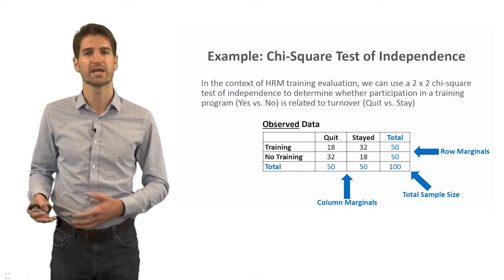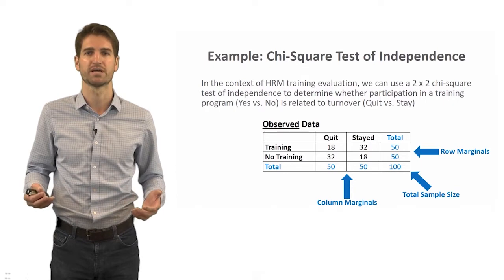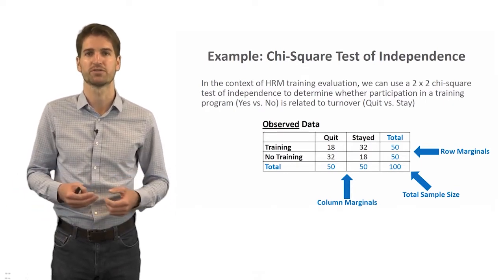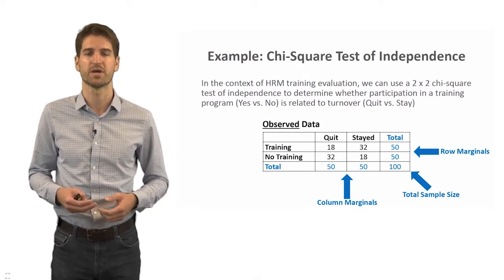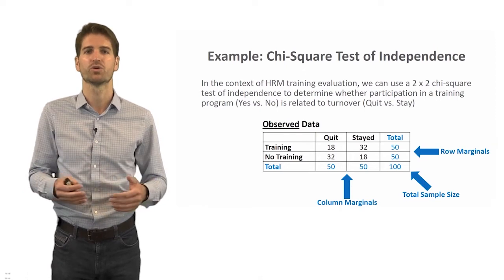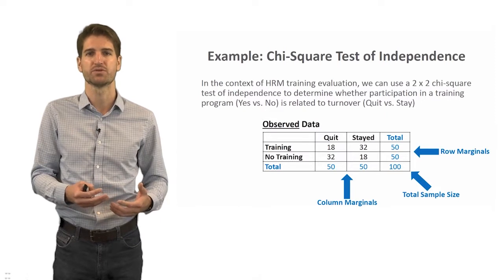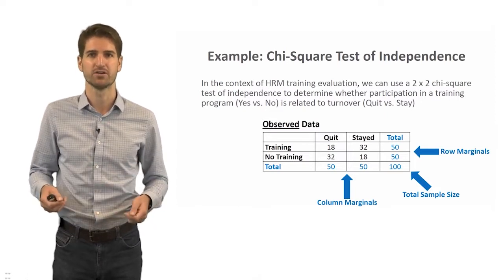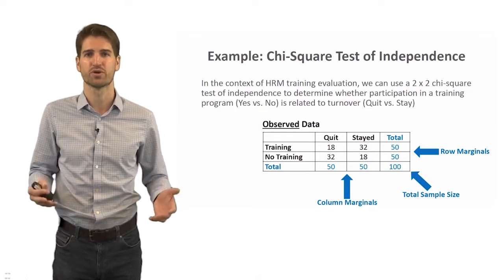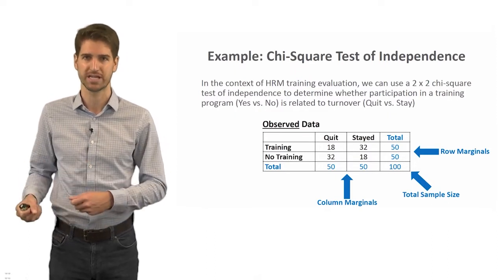In the lower right-hand corner of the contingency table, you'll see the total sample size — the total number of people in this sample on which we'll run the chi-square test. This contingency table contains what are called the observed data — the actual counts or frequencies we see in each cell. Because this is a two-by-two chi-square test, we have four cells: training versus no training, by quit versus stayed.